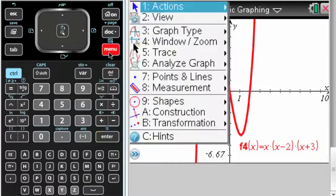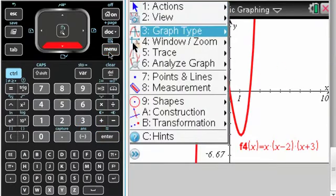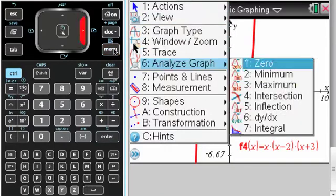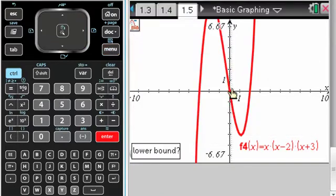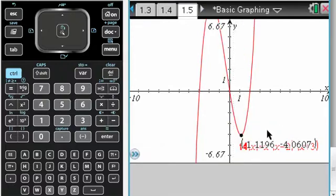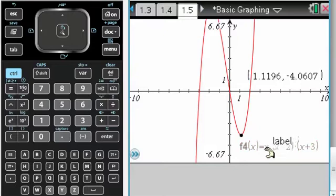And I'm going to resize my window. There, I'll just find this minimum. Menu, analyze graph, it's a minimum. I'll have to be a little to the left of it, a little to the right of it. Minimum shows up. I'm going to click and drag so I can actually see it, and it found the minimum for me. Maximum works the same way.